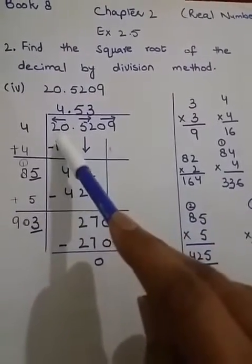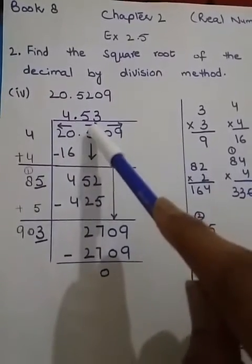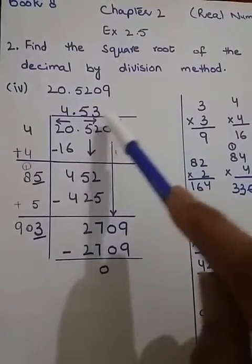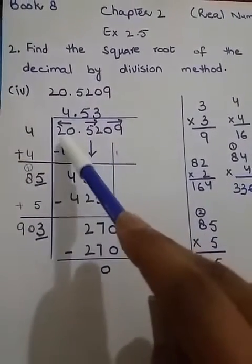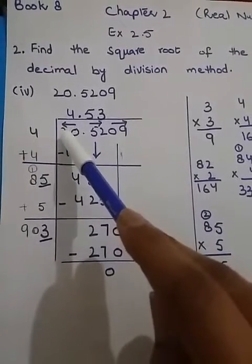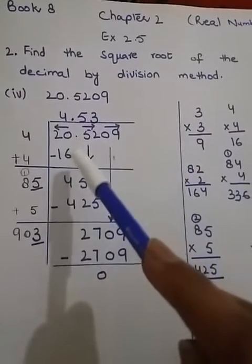First we will make pairs. On the right hand side of the decimal, the arrow will go towards the right hand side. We will start making pairs from this side. On the left hand side of the decimal, the arrow will go towards the left hand side. As I discussed in the previous lecture, we will take numbers in pairs.